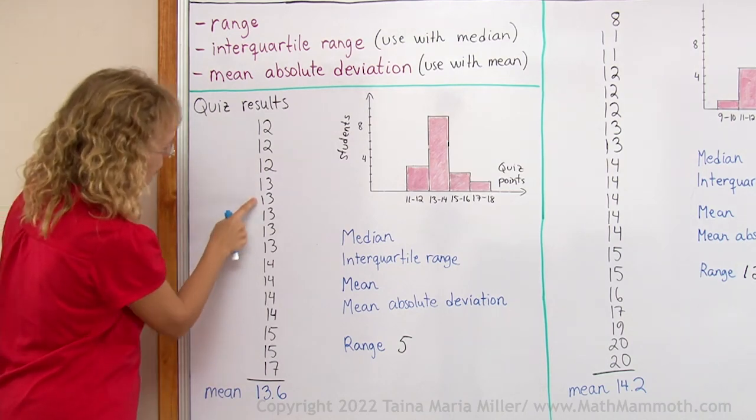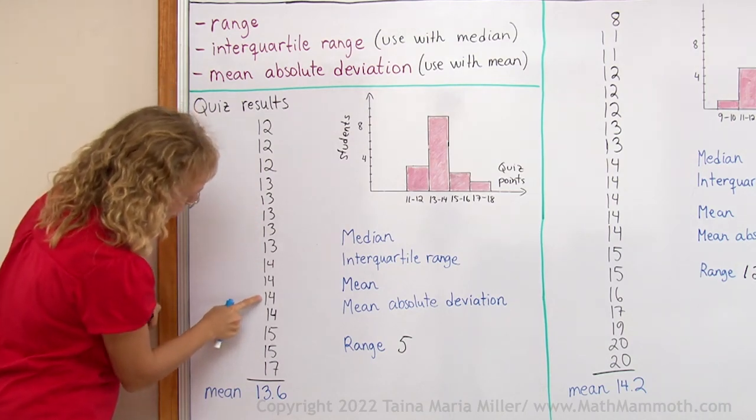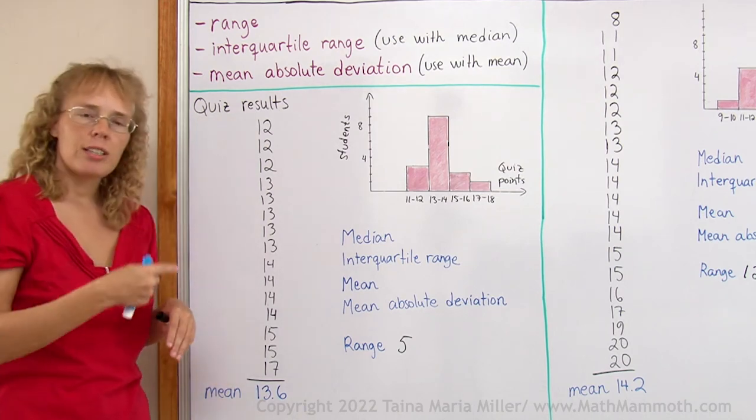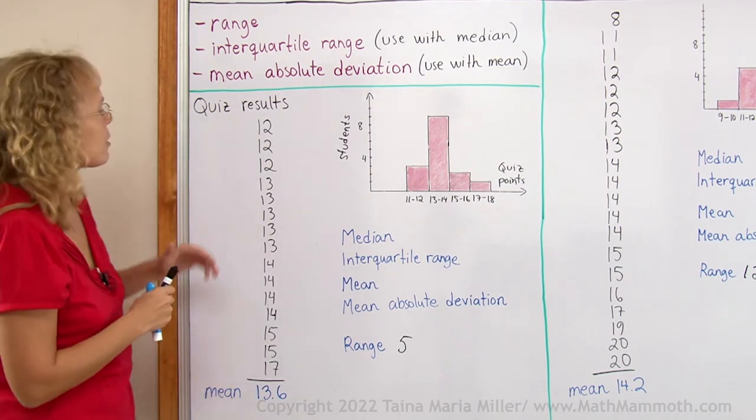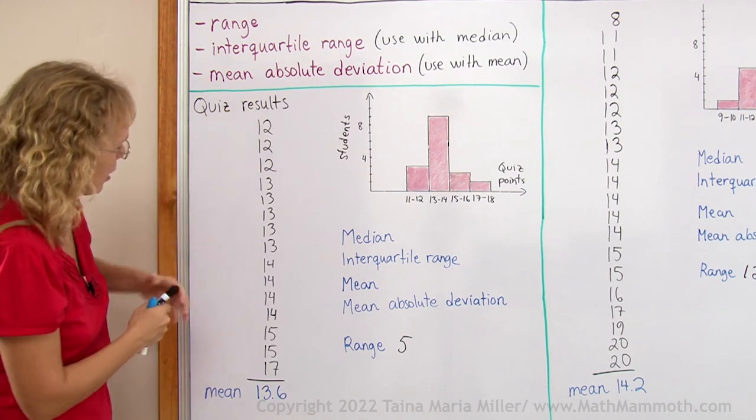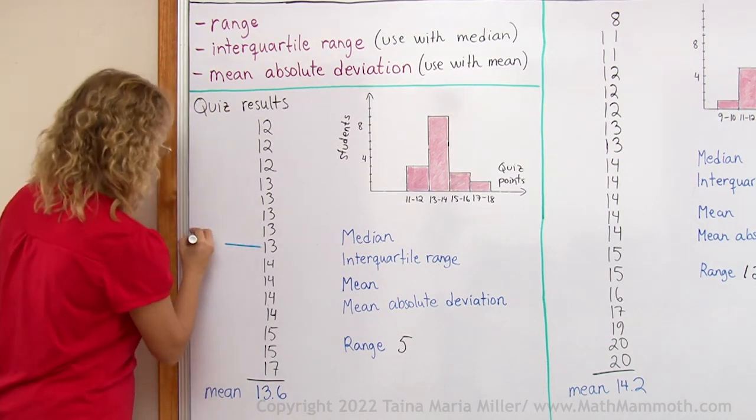So that's one, two, three, four, five, six, seven, eight, nine, ten, eleven, twelve, thirteen, fourteen, fifteen. So that means the eighth item here is my median. There. This median.